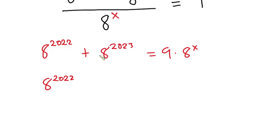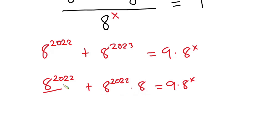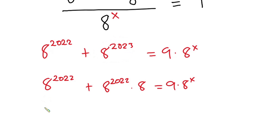Now I will rewrite a to the power 2023 as a to the power 2022 times a. This is equal to 9 times a to the power x. The reason I did this is to factor out a to the power 2022. You notice that when you multiply terms with the same base, you add the exponents — so you still get a to the power 2023.